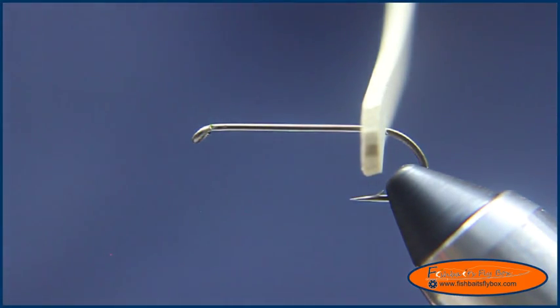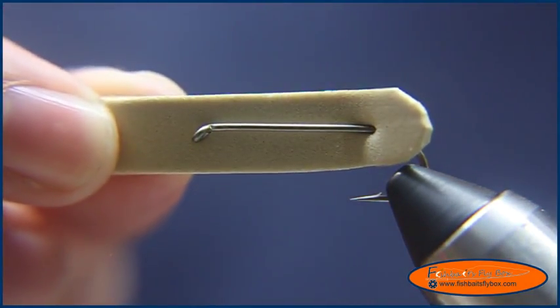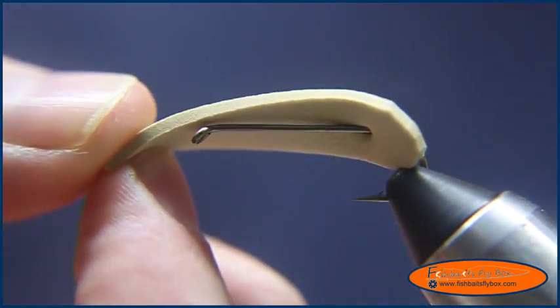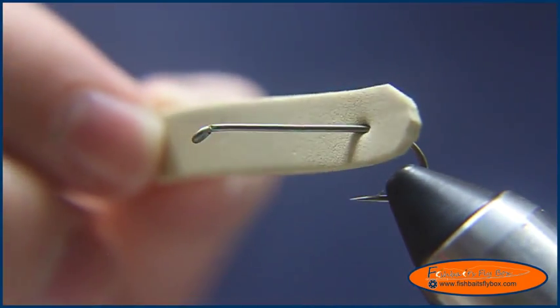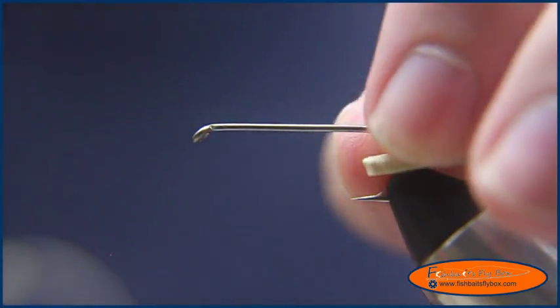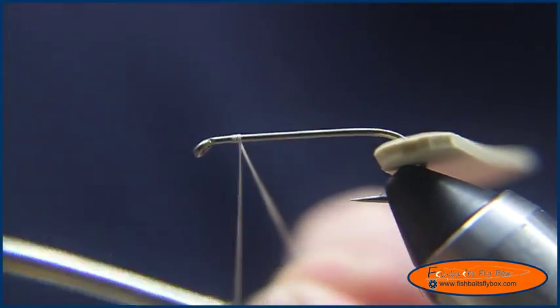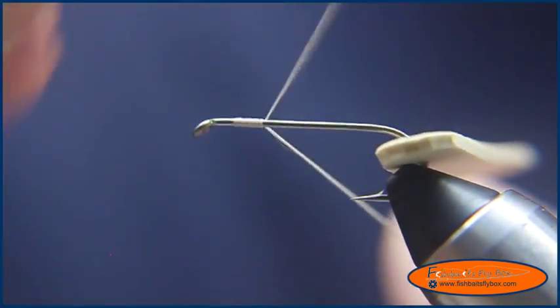What I'm going to tie tonight is a hopper wand. What I've got in the hook is a TMC 5262, size 6, and I've hooked it with some 2mm craft foam, cut with the Chernobyl cutters, and I'm going to start the thread from the back here, and I'm going to bring it to the bend of the hook.